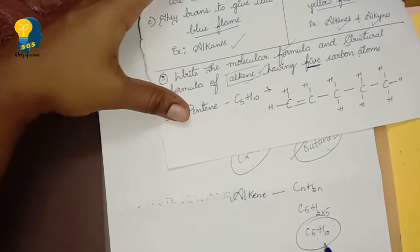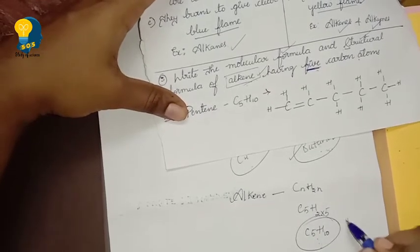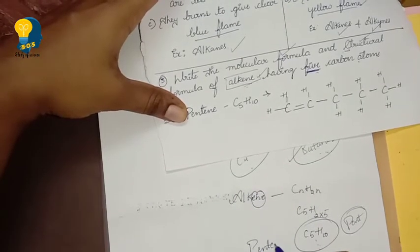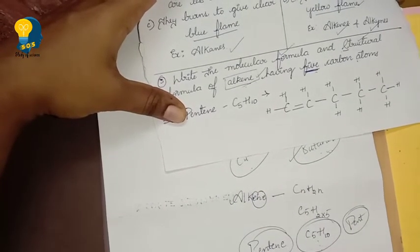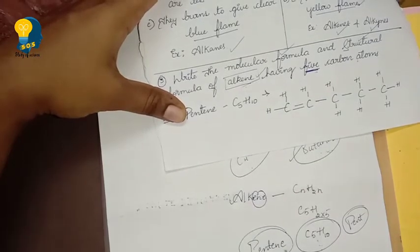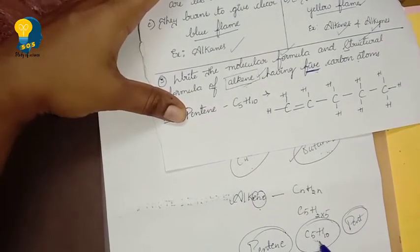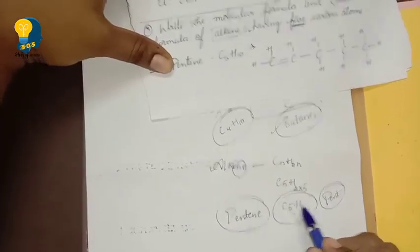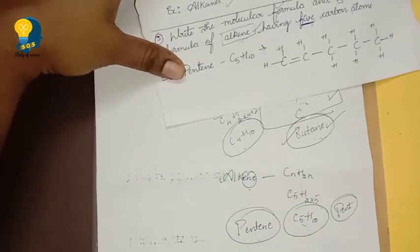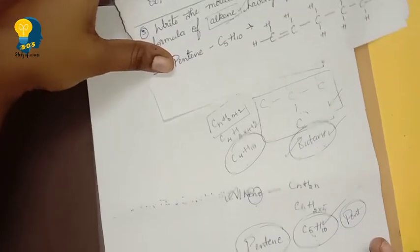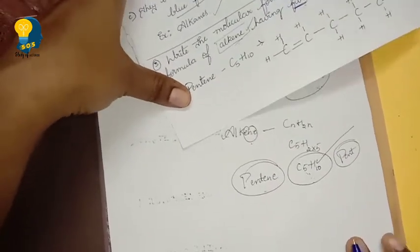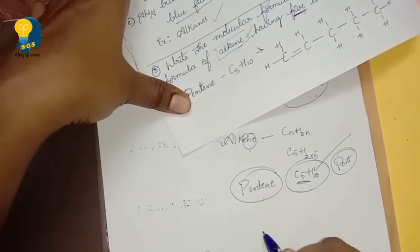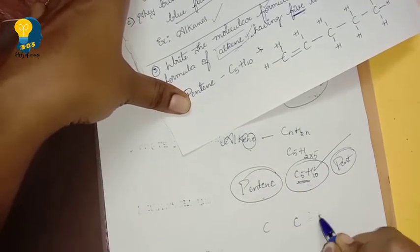So how to write this? First, alkene has the general formula CnH2n. We are writing for 5 carbon atoms, so let us substitute n = 5. C5H(2×5) = C5H10. So C5H10 is the molecular formula for the alkene with 5 carbon atoms. What is the name? 5 carbons means 'pent,' so pent + ene = pentene. It is pentene. So the alkene containing 5 carbon atoms is called pentene, and its molecular formula is C5H10. Now write 5 carbon atoms: 1, 2, 3, 4, 5.